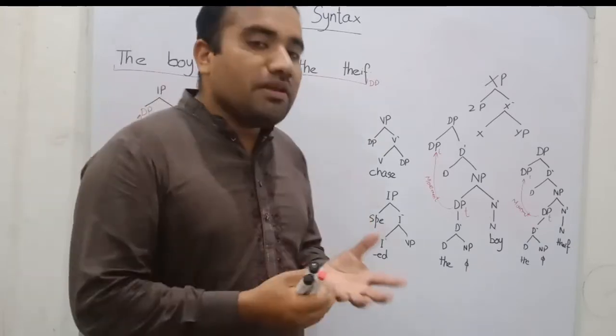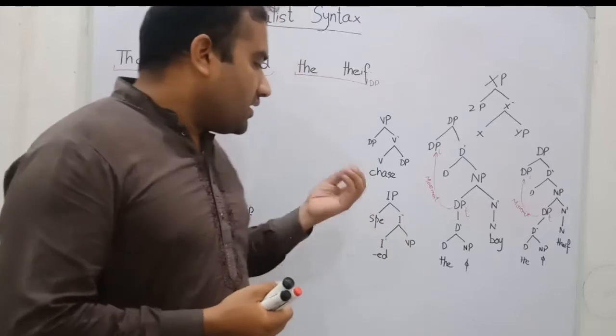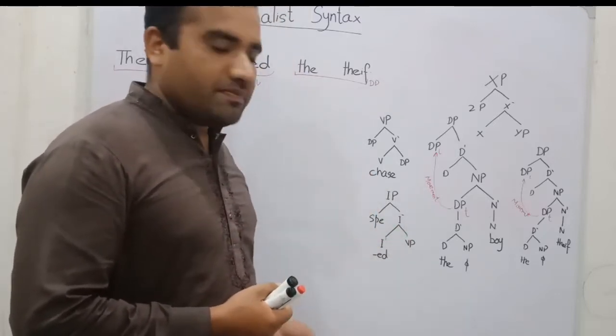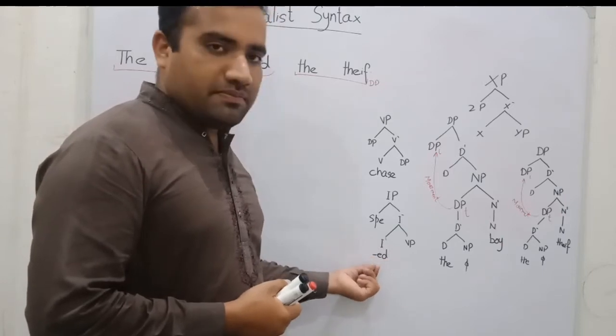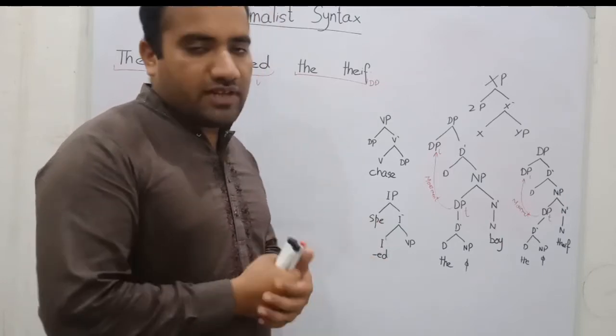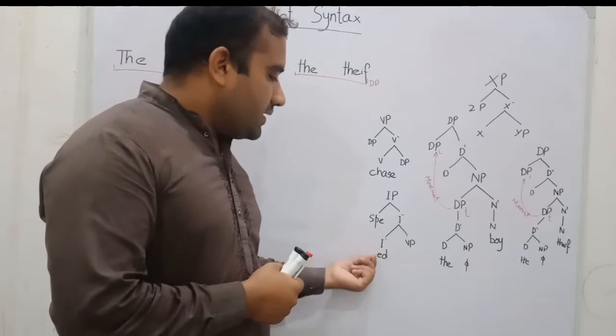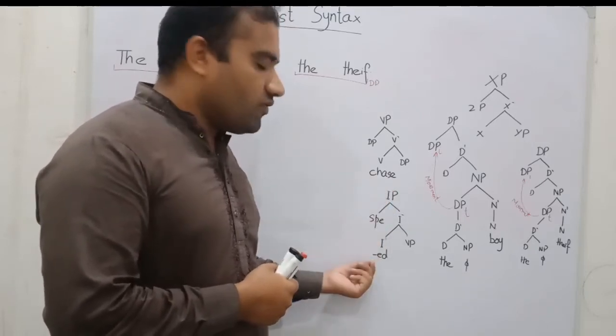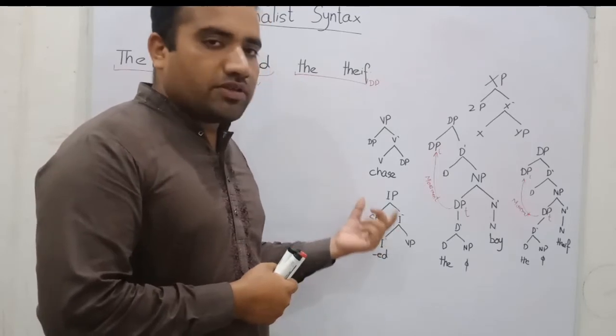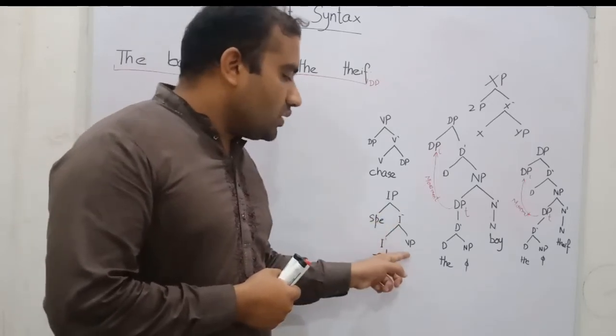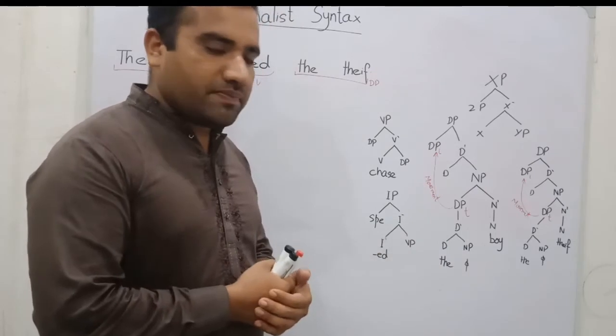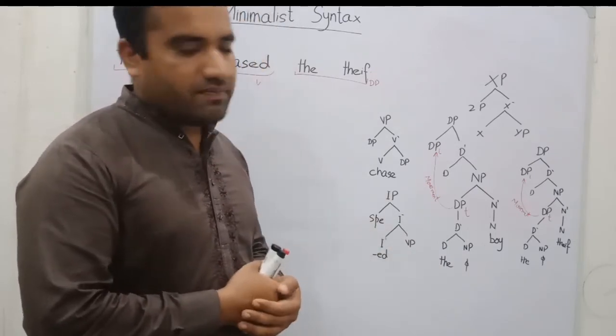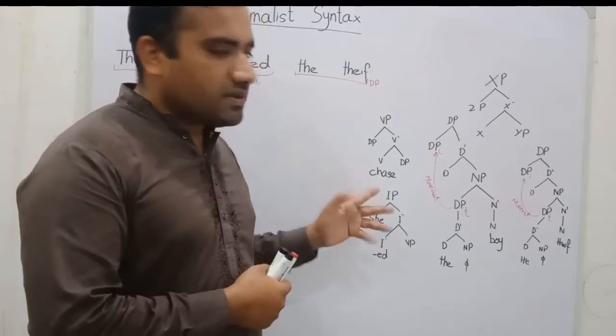Similarly, we have the functional category, the IP, the inflection category. It has the thematic layer, ED, the tense inflection. It also reflects the three levels. It also fulfills the X-bar theoretic notation. It will take the whole VP as the complement, and it will have the specifier position. And then it will become the IP.